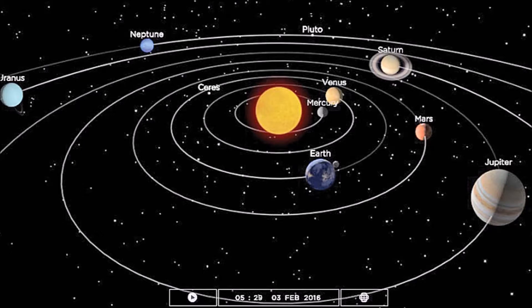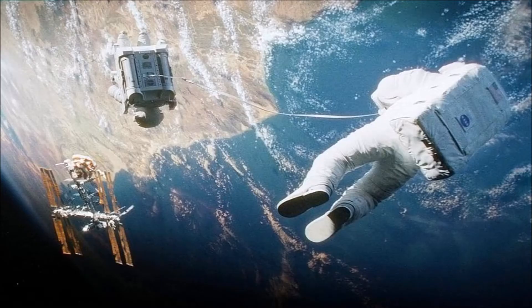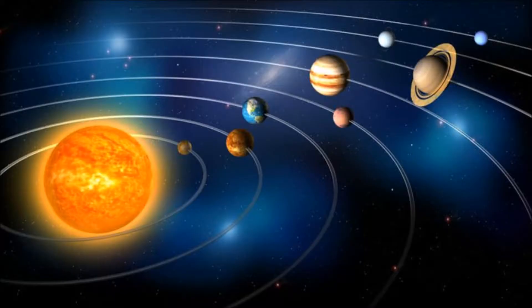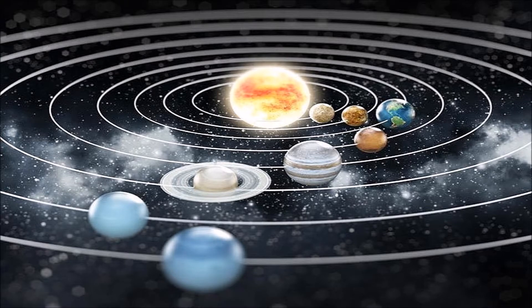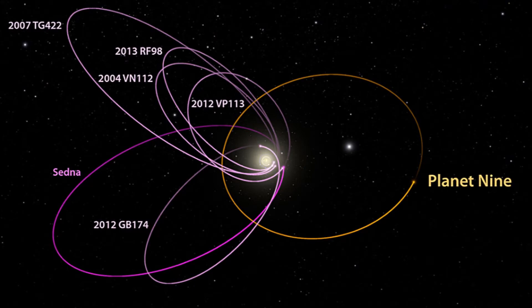Why do planets orbit the Sun in an elliptical motion? The force of gravity has no polarity, so the planets had to circulate around the Sun in a circular rather than elliptical motion. What causes the elliptical movement of the planets around the Sun? Why are the planets around the Sun moving in the form of disk motion? Why do planets not orbit the Sun freely in all directions?